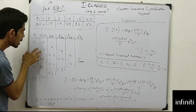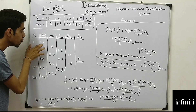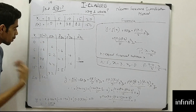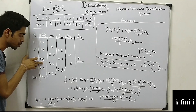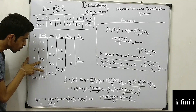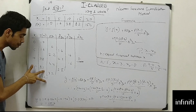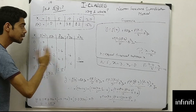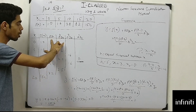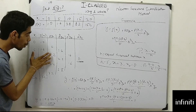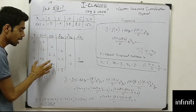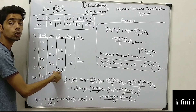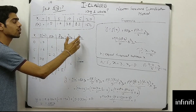To construct the table: 1.6 minus 1.0 gives 0.6, which is delta y0. Then 3.8 minus 1.6 gives 2.2, 8.2 minus 3.8 gives 4.4, and 15.4 minus 8.2 gives 7.2. For delta squared y0: 2.2 minus 0.6 gives 1.6, 4.4 minus 2.2 gives 2.2, and 7.2 minus 4.4 gives 2.8.